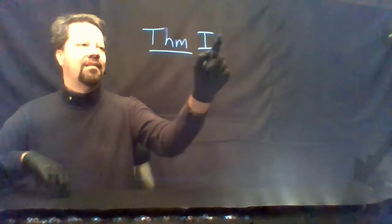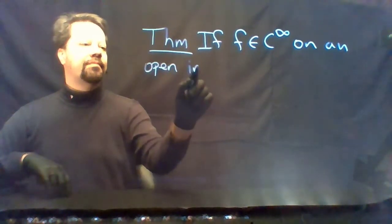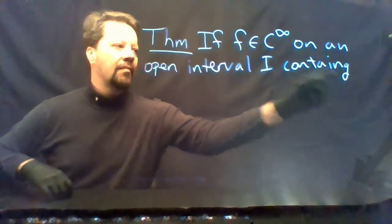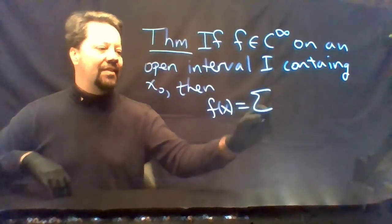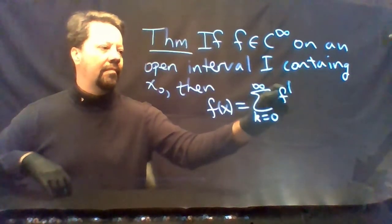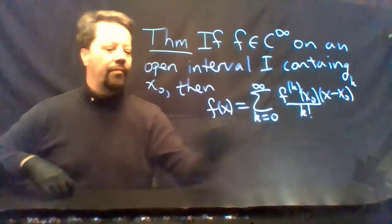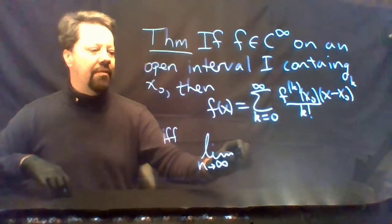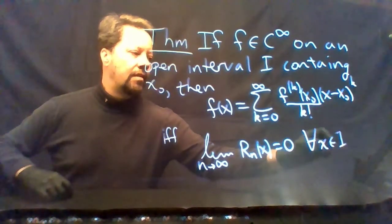The theorem goes like this. If f is infinitely differentiable on an open interval I containing x₀, then f of x equals its Taylor series if and only if the limit as n goes to infinity of the nth order remainder is zero everywhere inside the open interval I.